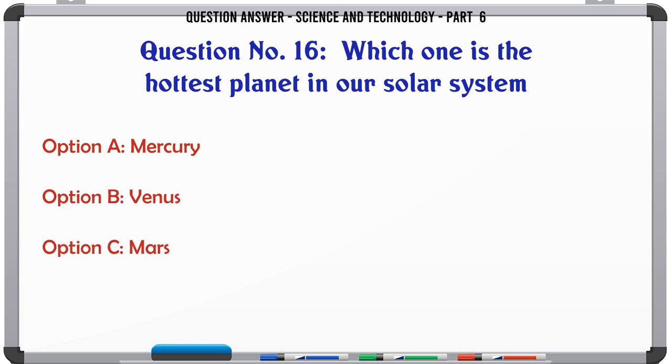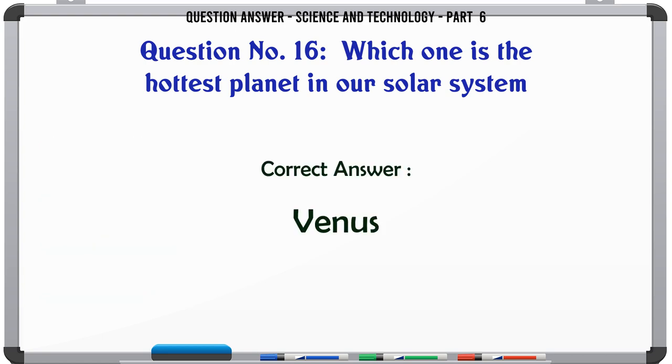Which one is the hottest planet in our solar system? A. Mercury. B. Venus. C. Mars. D. Saturn. The correct answer is Venus.